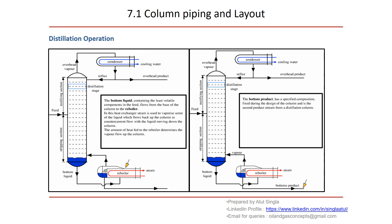In this section, the liquid going out and vapors coming in are again in counter-current flow — the same process happens, and liquid and vapor exchange components. The bottom product has a specific composition fixed during the design of the column and is the second product extracted from the distillation column. We use a condenser to get the overhead product and a reboiler to get the bottom product. This covers the rectifying and stripping sections and what is happening inside the column during the distillation process.